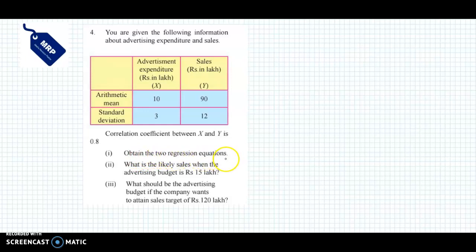The task is to obtain the two regression equations. What is the likely sales when advertising budget is 15 lakhs? And what should be the advertising budget if the company wants to attain sales of 120 lakhs? Let's see what information is given.